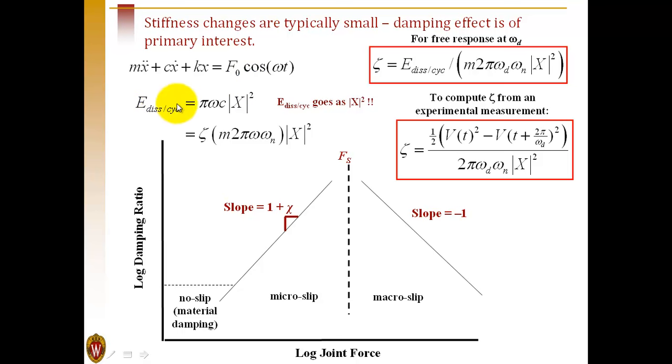We can derive this from the energy dissipated per cycle, which for a single degree of freedom system is given by this expression. Then we can use the standard definitions for damping ratio, essentially linearizing over one cycle of the response in a free decay, for example, and use that to define the damping ratio as a function of energy dissipated per cycle.